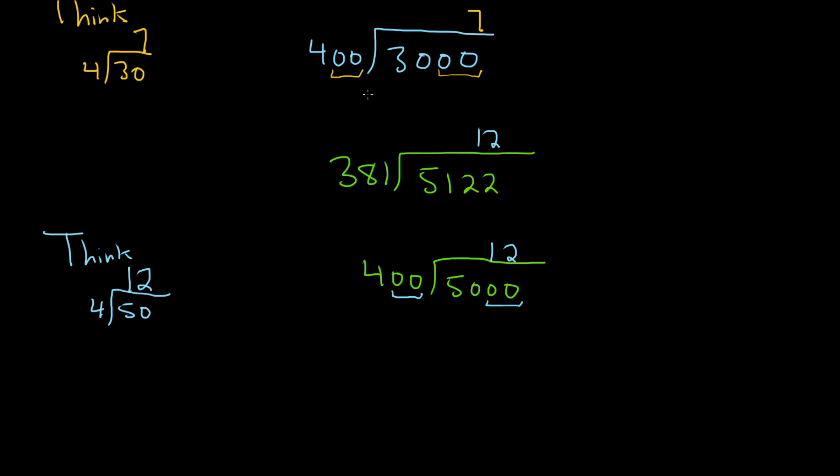So again, you just round to the largest place value, remove zeros so that this becomes a convenient number, and then think about the new problem. Write your answer down, and that's the answer for your original problem. I hope this video has been helpful.